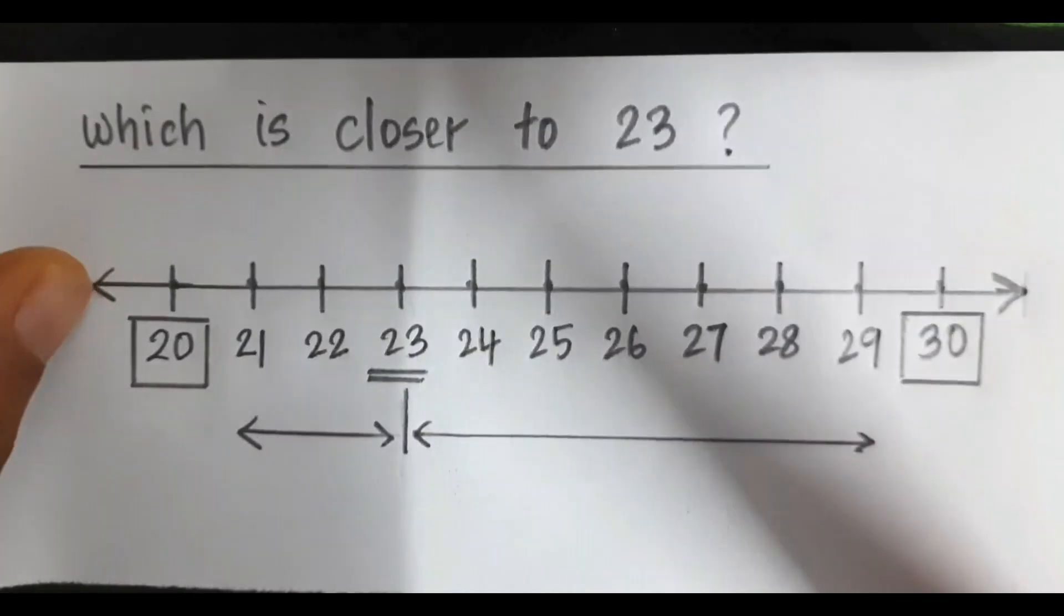Let's take the number 23. Now, ask the child to mark numbers from 20 to 30 on a number line, this way.